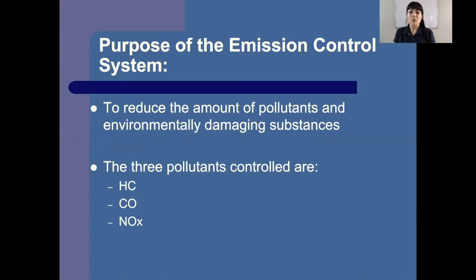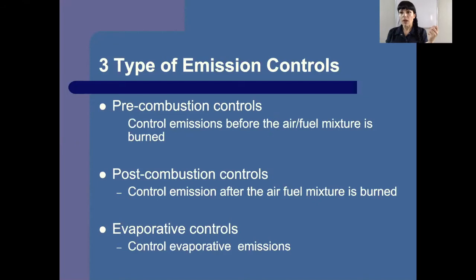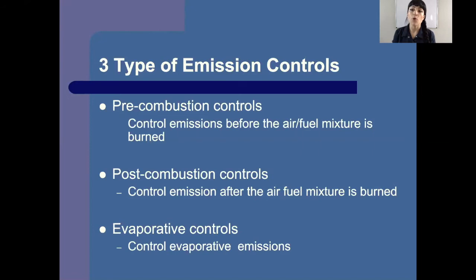In our vehicles, we have emission control systems to reduce those harmful pollutants. The three pollutants that we focus on in gasoline vehicles are hydrocarbons, carbon monoxide, and oxides of nitrogen — in diesel vehicles they also focus on particulates. The three types of emission controls fall under one of three categories: pre-combustion controls, meaning we're trying to do something before we ignite the air-fuel mixture to prevent emissions; post-combustion controls, where we've already made the mess and now we clean it up; and evaporative controls, focusing mainly on the raw fuel stored in the vehicle.